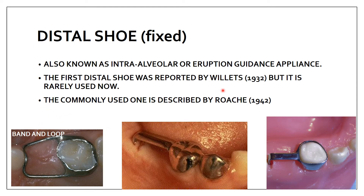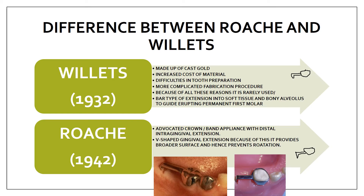The first distal shoe was reported by Willits in 1932, but it is rarely used today. The commonly used one was described by Roach in 1942. The main difference between Willits and Roach lies in the gingival extension. The Willits appliance was made of cast gold, resulting in increased cost, difficulty in preparation, and a more complicated fabrication procedure.